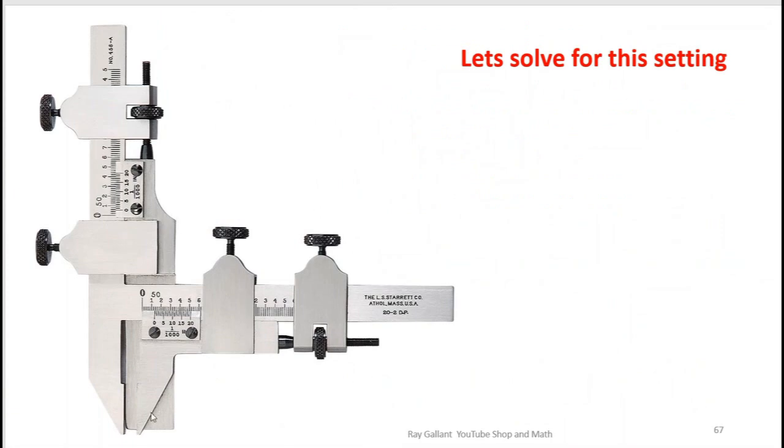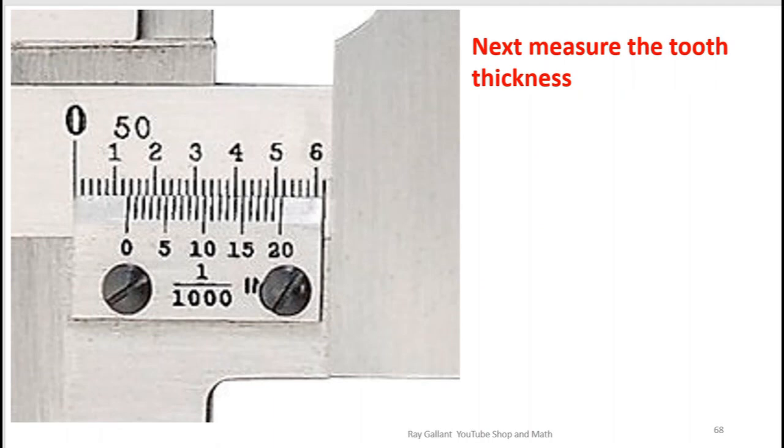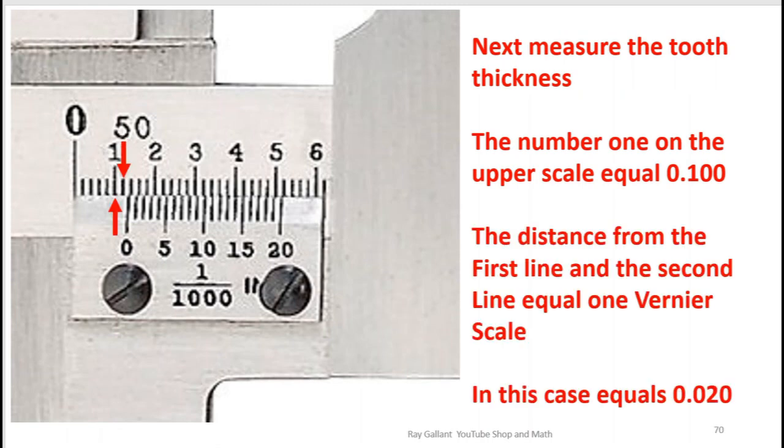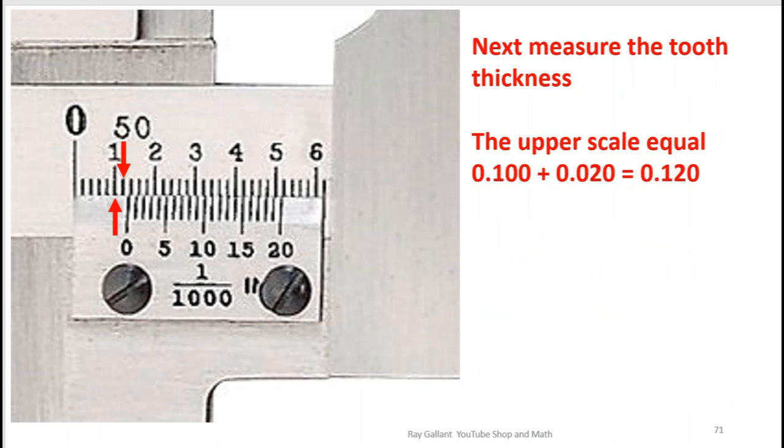Okay so let's solve for this lower setting here. The tooth thickness measurement. So our first number equals 100. So then the second line is going to be 20 thou. So we have 120 thou.